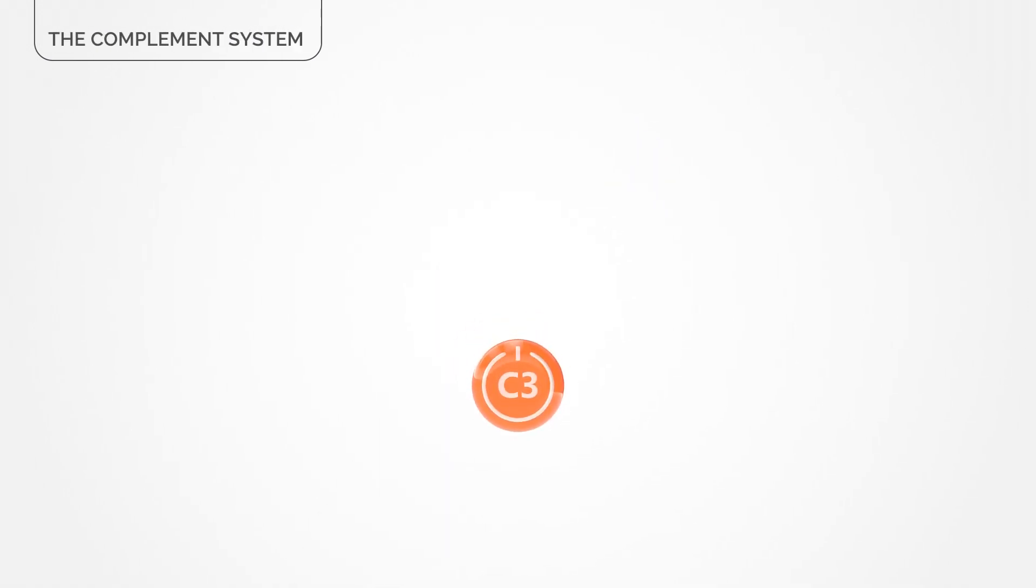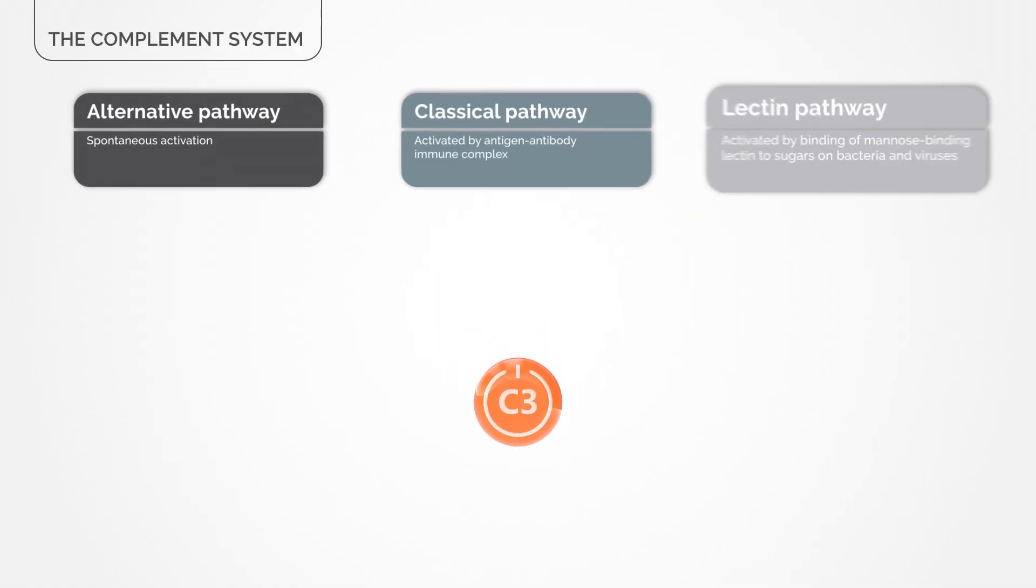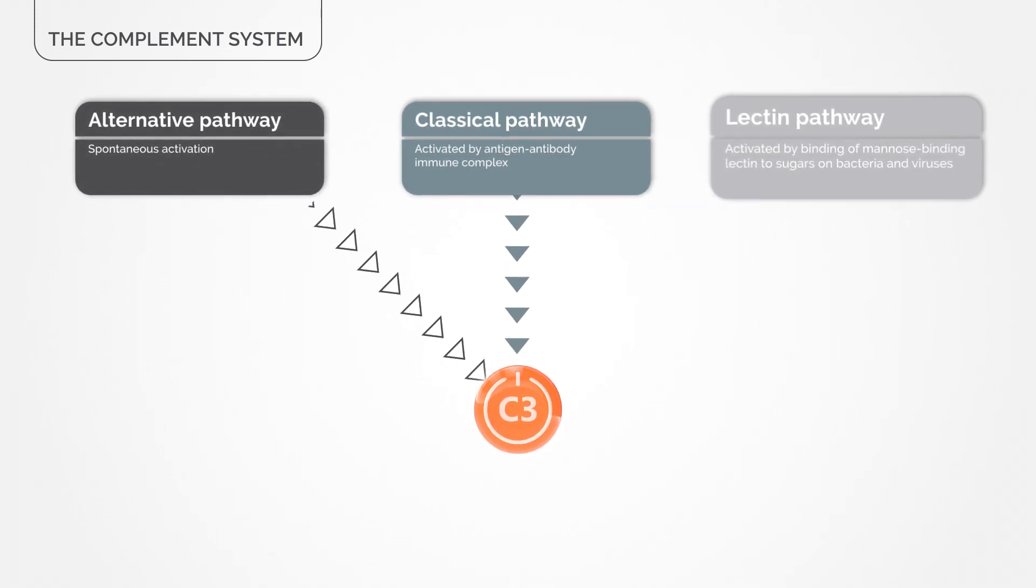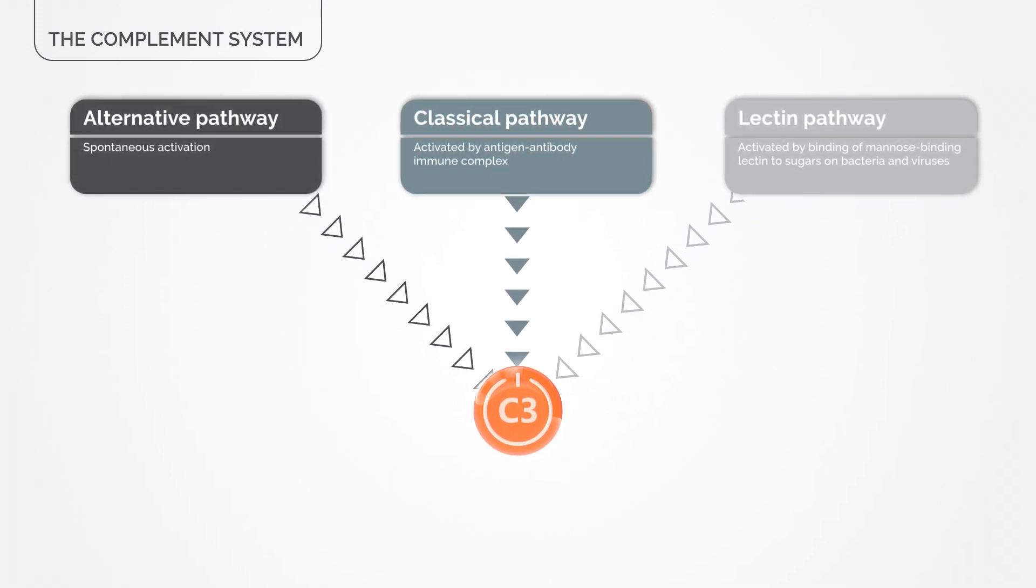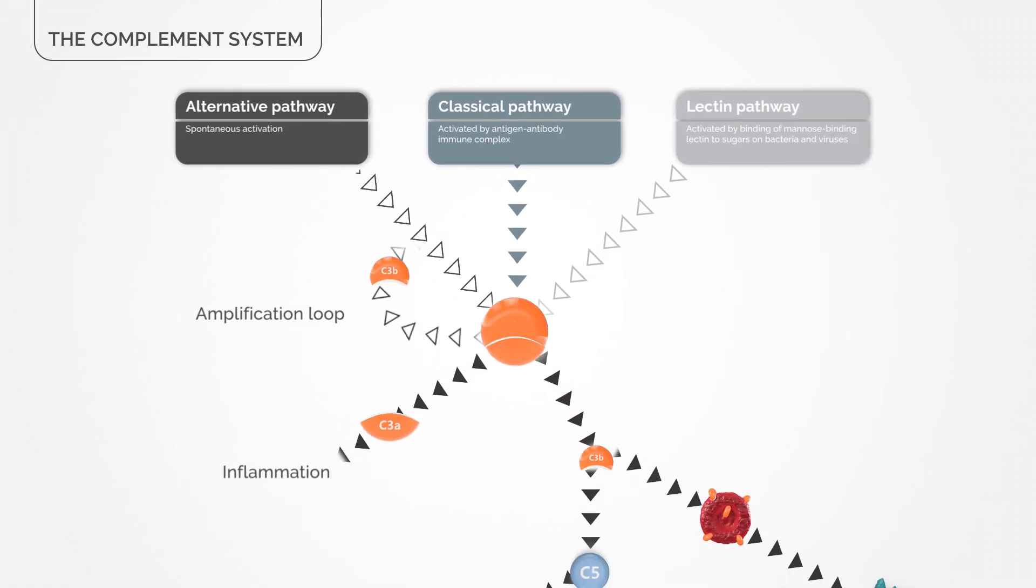The complement system may be activated by three different pathways: the alternative, classical, and lectin pathways that all run through complement C3, the central protein in the cascade.